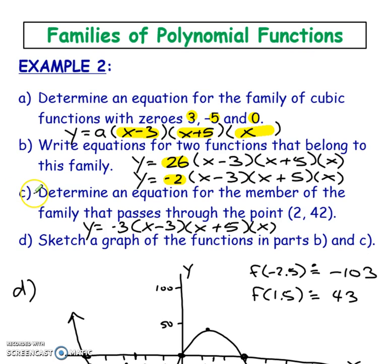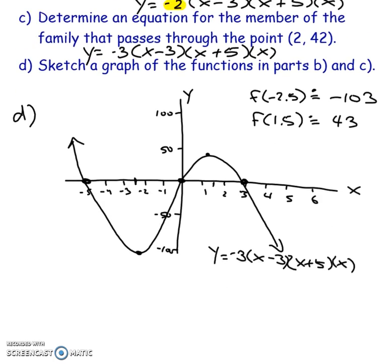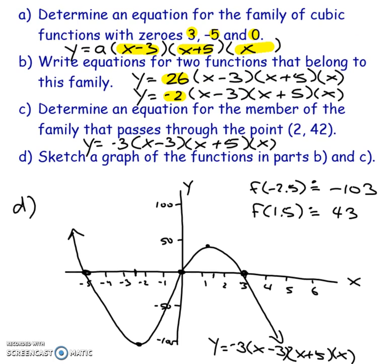Now determine an equation for the member of the family that passes through 2 and 42. So remember we just did that. What you're going to do is make sure that you have your three factors and then put this guy into all of your x's and then this guy into your y. And you're going to solve and I got negative 3 as my answer.